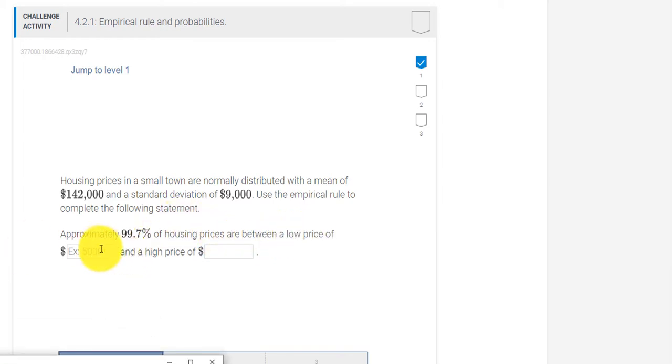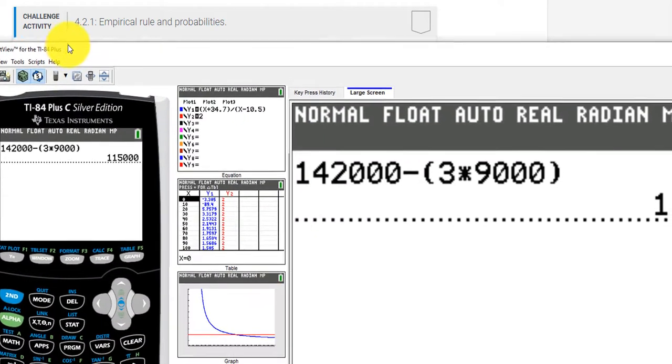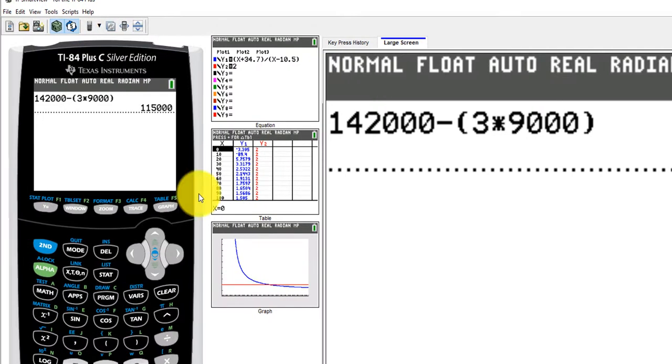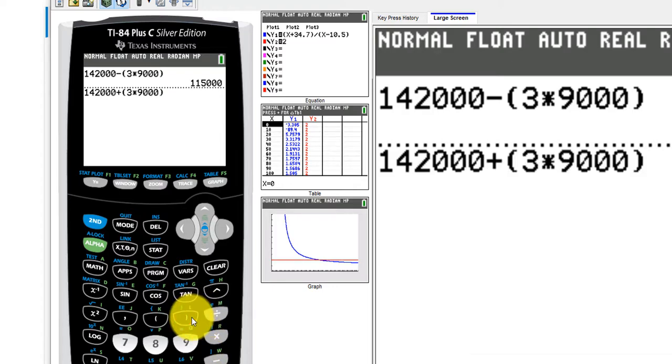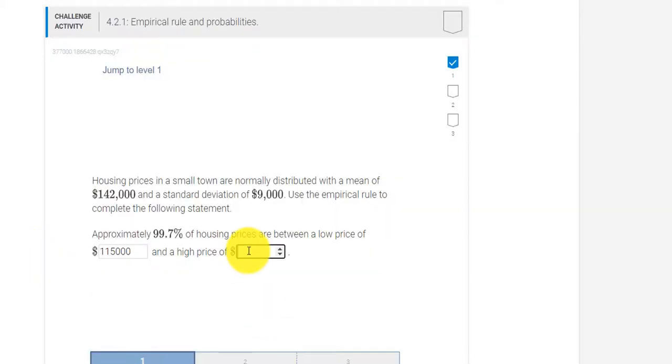So between a low price of 115,000 and the high price. To get the high price, we have to add three standard deviations to our mean. Our mean was 142,000 plus three times the standard deviation. And that gives me 169,000. We press check answer.